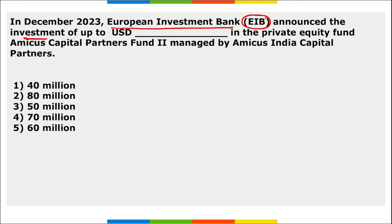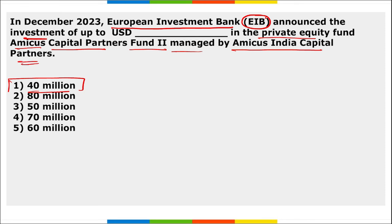Next: EIB (European Investment Bank) announced an investment of up to 40 million dollars in the private equity fund Amicus Capital Partners Fund 2, managed by Amicus India Capital Partners. The fund will prioritize investment in digital-first business models and promotes crowding-in and diversification of investors.